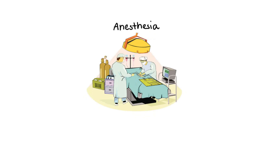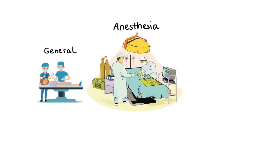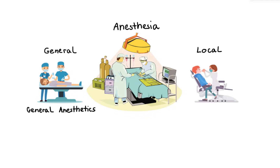There are two main types of anesthesia. First is general anesthesia, which makes the whole body lose feeling, movement and consciousness. Drugs used to induce this type are called general anesthetics. The second type is local anesthesia, which numbs only a specific targeted area of the body. Drugs used to induce local anesthesia are called local anesthetics.